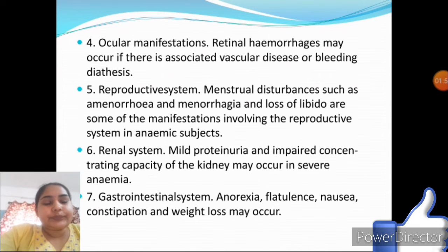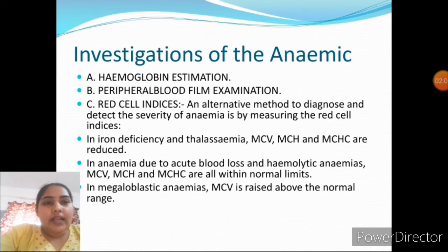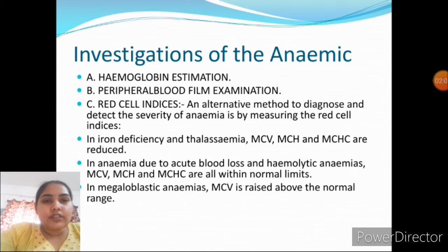Renal system: mild proteinuria and impaired concentrating capacity of the kidney may occur in severe anemia. Gastrointestinal system: symptoms such as anorexia, flatulence, nausea, constipation, and weight loss may occur.